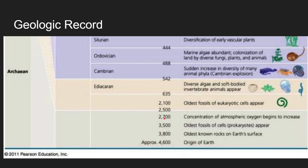3.5 billion years ago is the oldest fossil ever found. Using elemental dating, we found these cells — prokaryotes, single-celled organisms — to be around 3.5 billion years old. Literally a billion years after Earth formed, we see life. Fast-forwarding 700 million years, we see the concentration of oxygen beginning to increase, which means something at this point is creating oxygen.